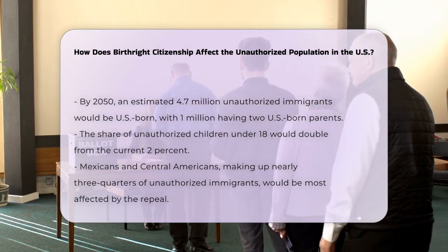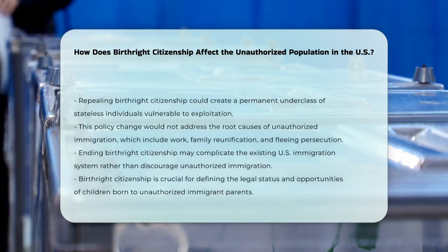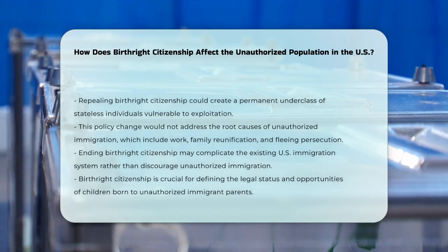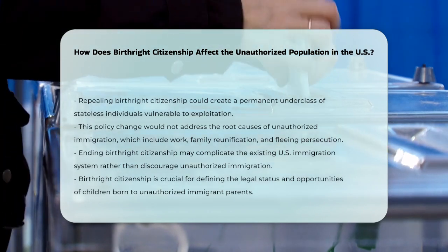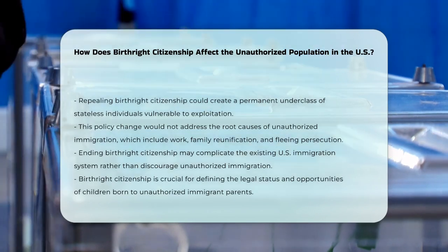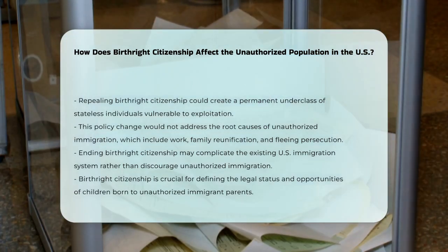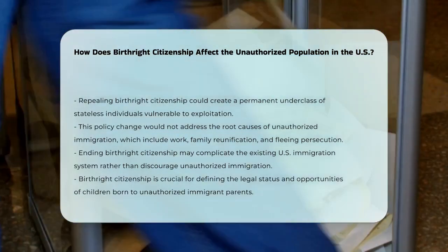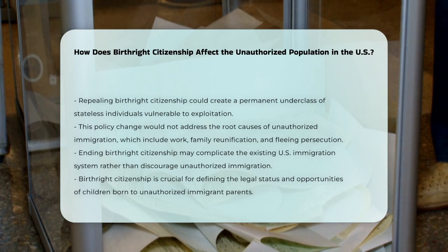Additionally, this policy change would not address the root causes of unauthorized immigration. Immigrants come to the U.S. primarily to work, reunite with family, or flee persecution, not specifically to give birth. Therefore, ending birthright citizenship would not discourage unauthorized immigration and would instead complicate the already complex U.S. immigration system.